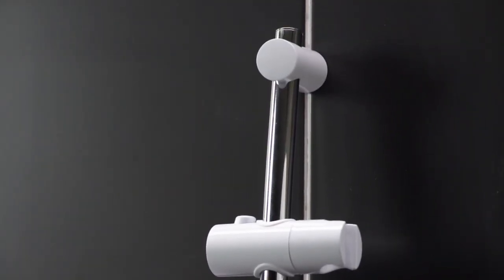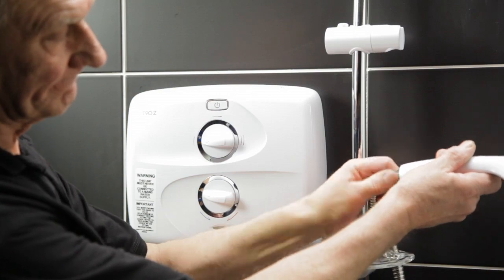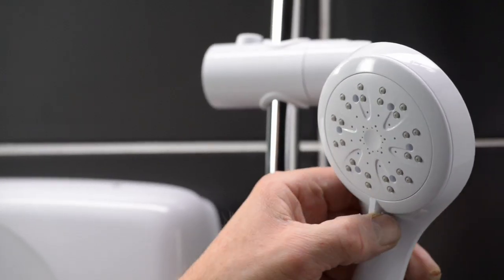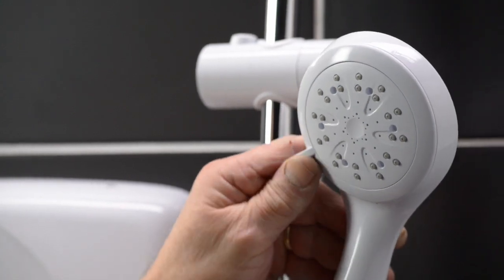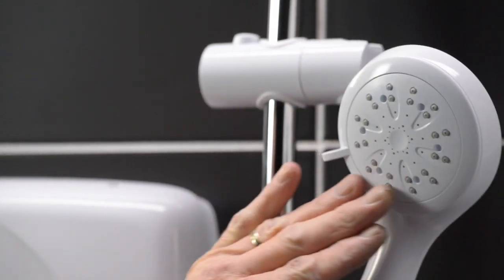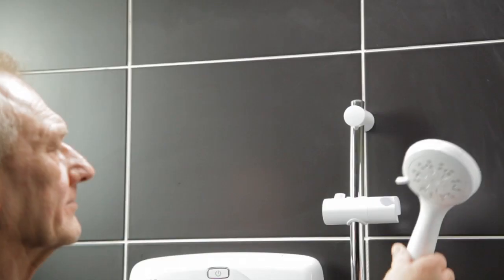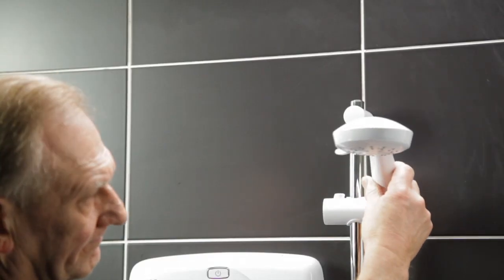Now the kit is in place, fit the shower head to the hose. The shower head has five spray settings and a rub-clean spray plate. Lock into place in the handset holder.